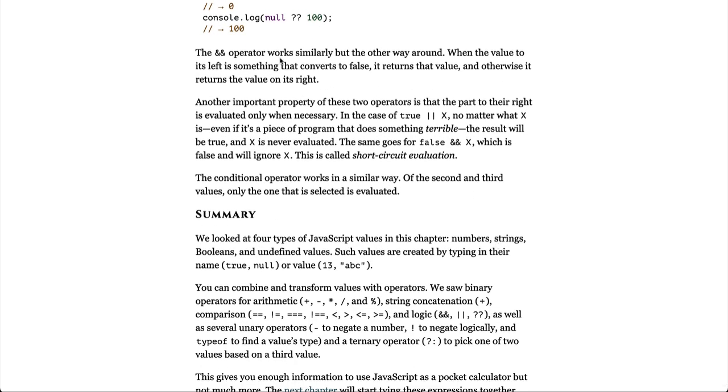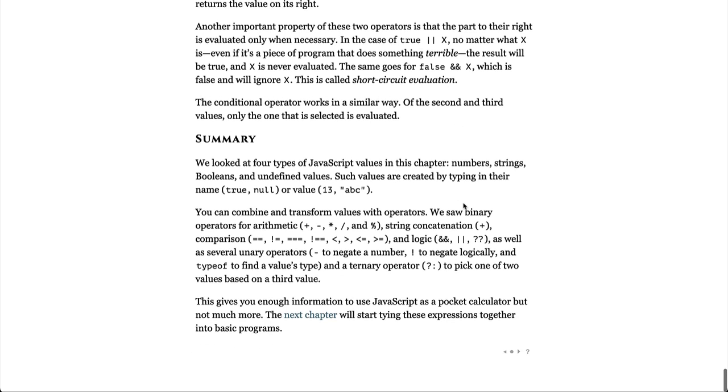The and operator works similarly but the other way around. When the value to the left is something that converts to false, it returns that value, and otherwise it returns the value on its right. Another important property of these two operators is that the part to the right is evaluated only when necessary. In the case of true or x, no matter what x is, even if it's a piece of a program that does something terrible, the result will be true, and x is never evaluated. The same goes for false and x, which is false and will ignore x. This is called short circuit evaluation. The conditional operator works in a similar way. Of the second and third values, only the one that is selected is evaluated.